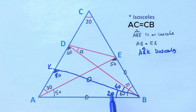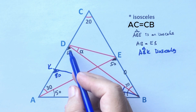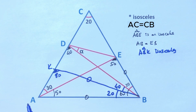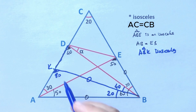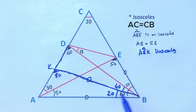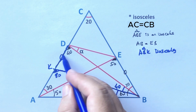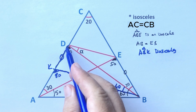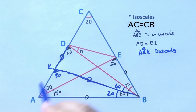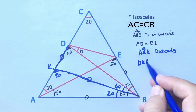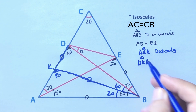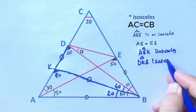There are 20 degrees left here and this angle must be 40 degrees. Notice that these two angles are equal, which means these two sides must be equal. Therefore, triangle DKB is also an isosceles triangle.